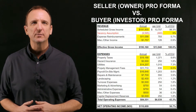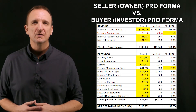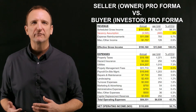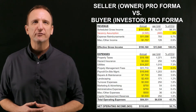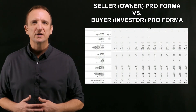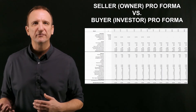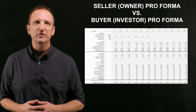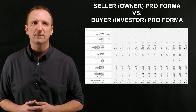Pro formas may look very different depending on if they are compiled by a buyer or seller. Sellers typically want to get top dollar for their property when they're marketing it for sale, so they're usually going to represent the property's performance when it is operating at its best. Buyers, on the other hand, typically want to project what they think is most likely to happen in the future, and they may make adjustments to account for various risks or market conditions that they think may need to be accounted for.